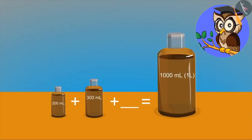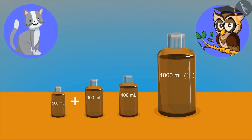Now see, in one bottle, we have 200 ml of oil and in the other, we have 300 ml of oil. Now tell me, to fill a 1000 ml bottle or 1 litre bottle, how much oil will you need? Is the answer 400 ml?